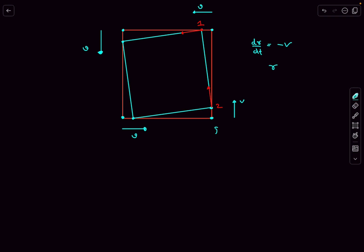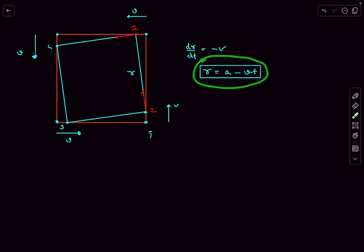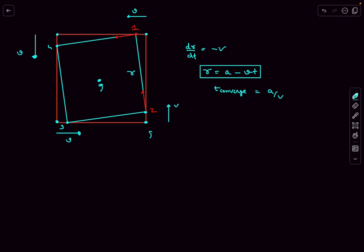This is an easy integral. The distance r between any two particles as a function of time is r(t) = a − vt, where a is the initial side length. From here we can also find the time of convergence: when r = 0, t_converge = a/v. So after a time of a/v, all particles will meet at the center.